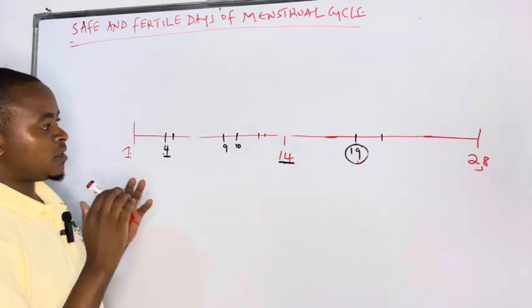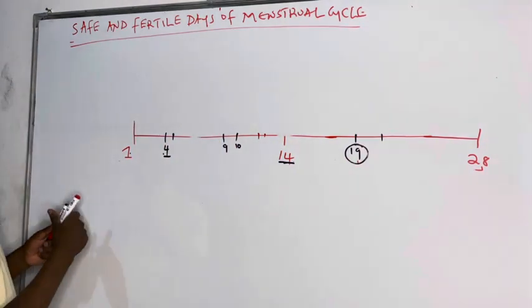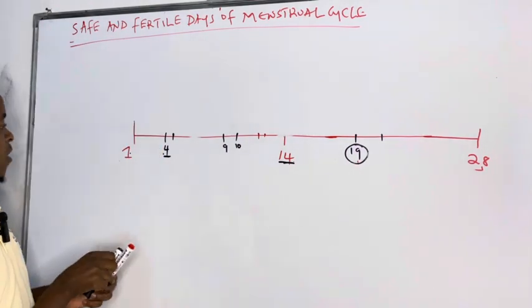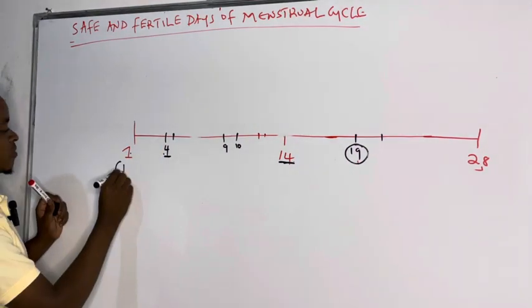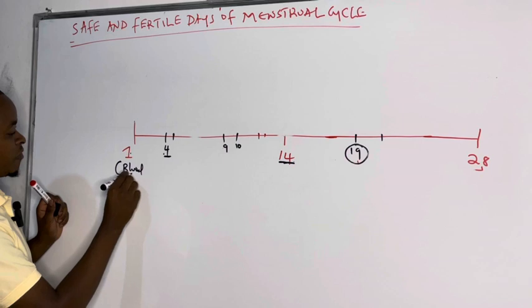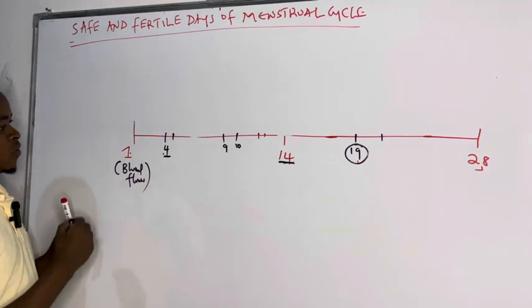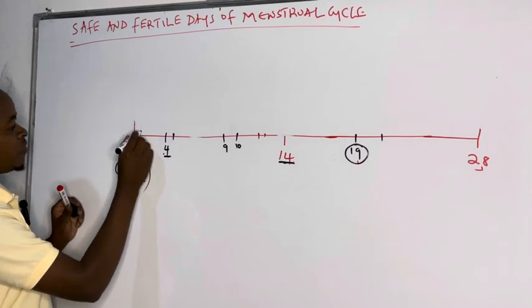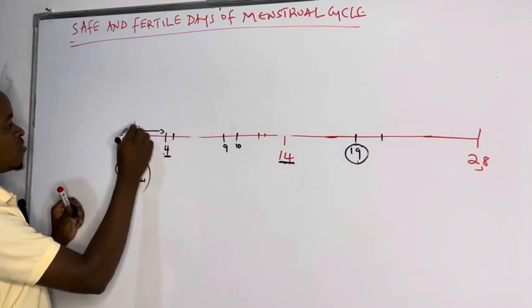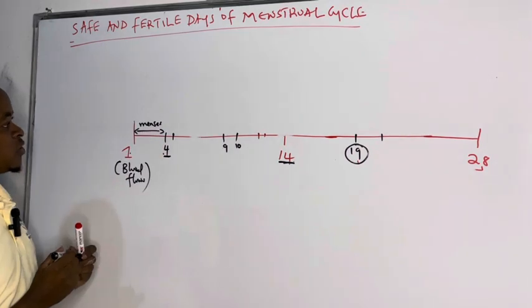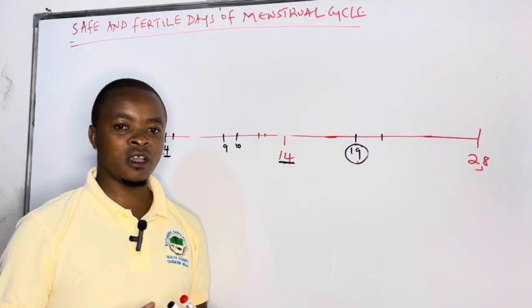How do you know that your menstrual cycle begins from day 1 up to day 28? Day 1 is when you see blood flow. When blood flows, that is your day 1. Between day 1 to day 4, this is when you have your menses, meaning there is blood flow and we don't expect you to have sexual intercourse with your partner.